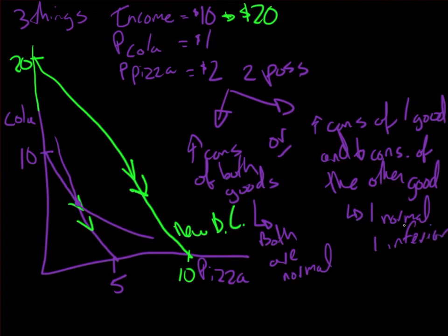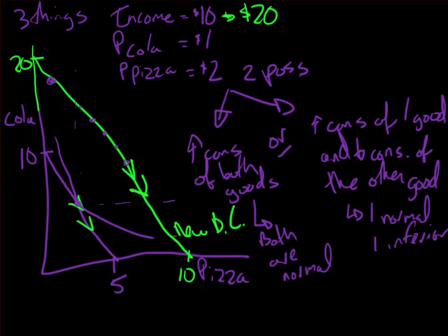Following this income level change, if my new equilibrium point falls anywhere along the new budget constraint between the two original corner values, I'm increasing both Cola and pizza consumption, so both goods are normal. However, if I end up consuming less pizza, then pizza would be inferior and Cola would be normal. And if I consume much more pizza but less Cola, then pizza is normal and Cola is inferior.